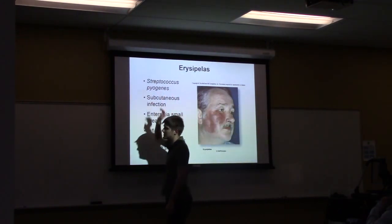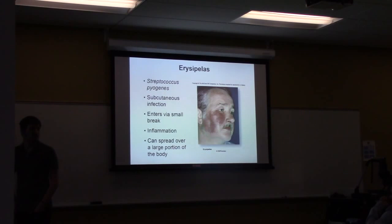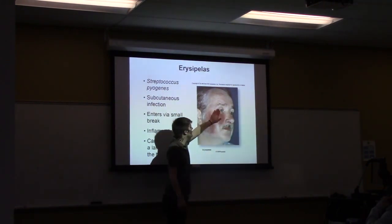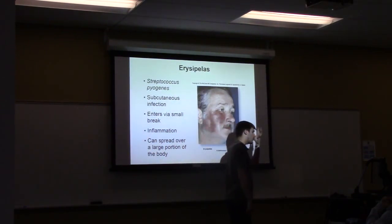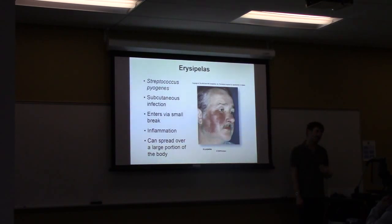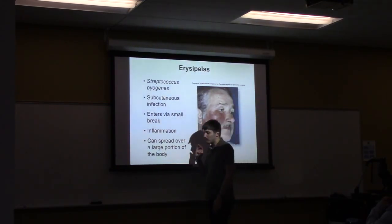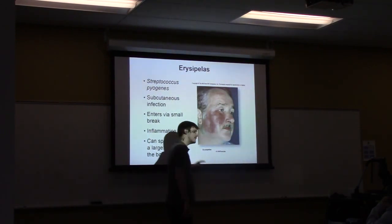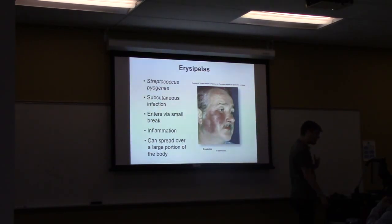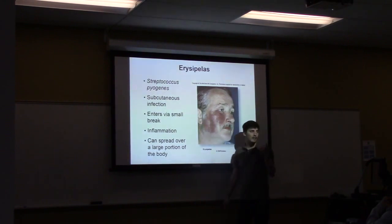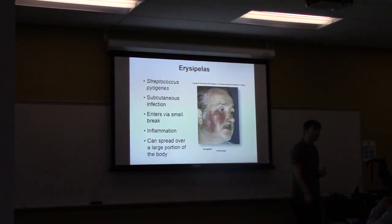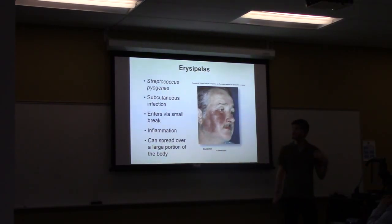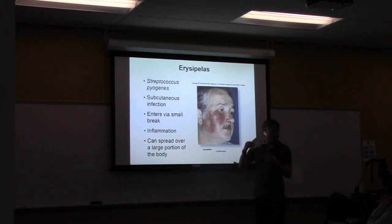Erysipelas is caused by Streptococcus pyogenes and occurs when the organism makes its way into the subcutaneous layer. It causes a widespread inflammatory reaction — a bright red rash wherever the organism is found — that can spread very quickly within hours. This usually requires hospital admission to prevent spread, because if untreated it can enter blood vessels and spread further into the body. It's primarily transmitted through a small break in the skin, and most healthy individuals with a competent immune system would stop it before it progresses.